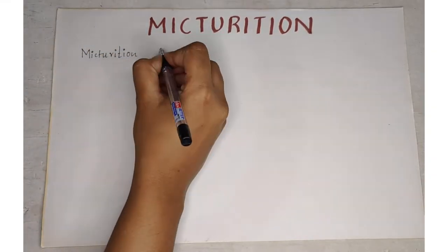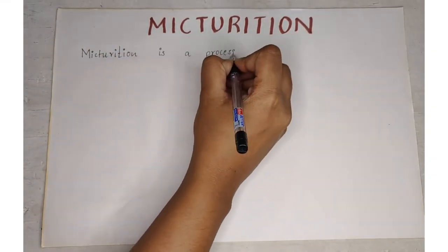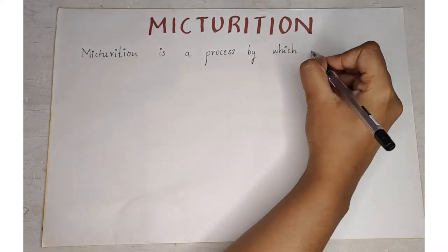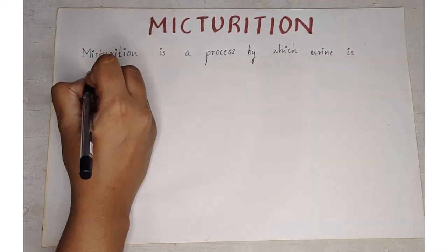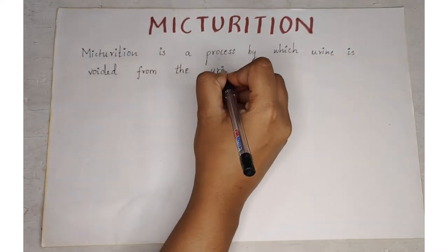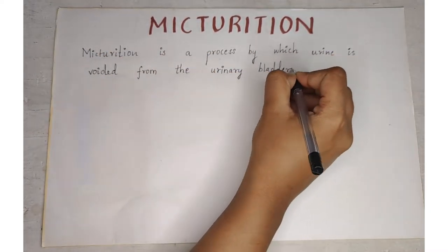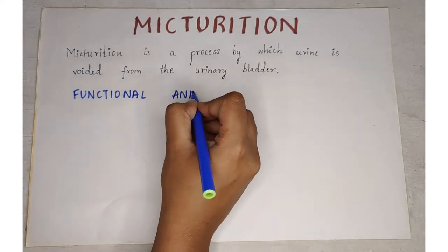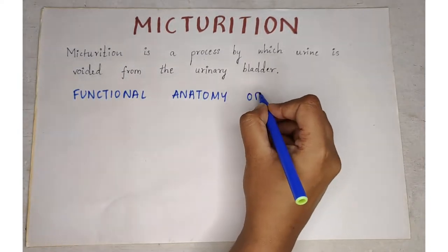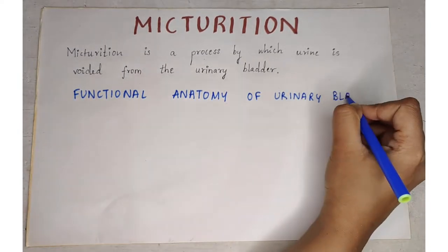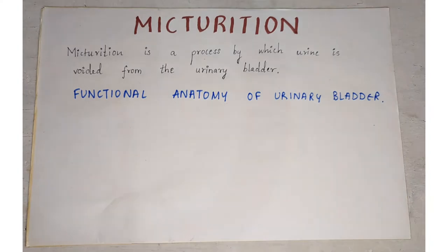Micturition is a process by which urine is voided from the urinary bladder. To understand this, we have to know the functional anatomy of the urinary bladder.